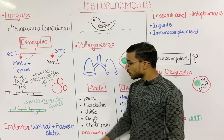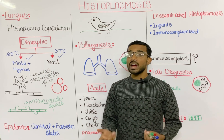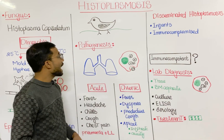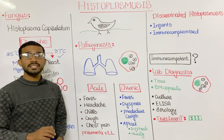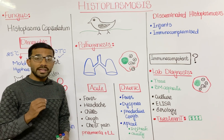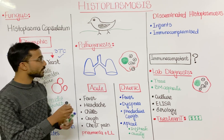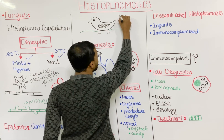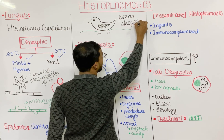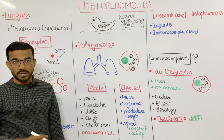Regarding epidemiology, Histoplasma capsulatum is found specifically in the central and eastern states of the US, particularly in the Mississippi River Valley. This fungus easily grows in soil contaminated with bird droppings, which are the most favorable conditions for its growth.